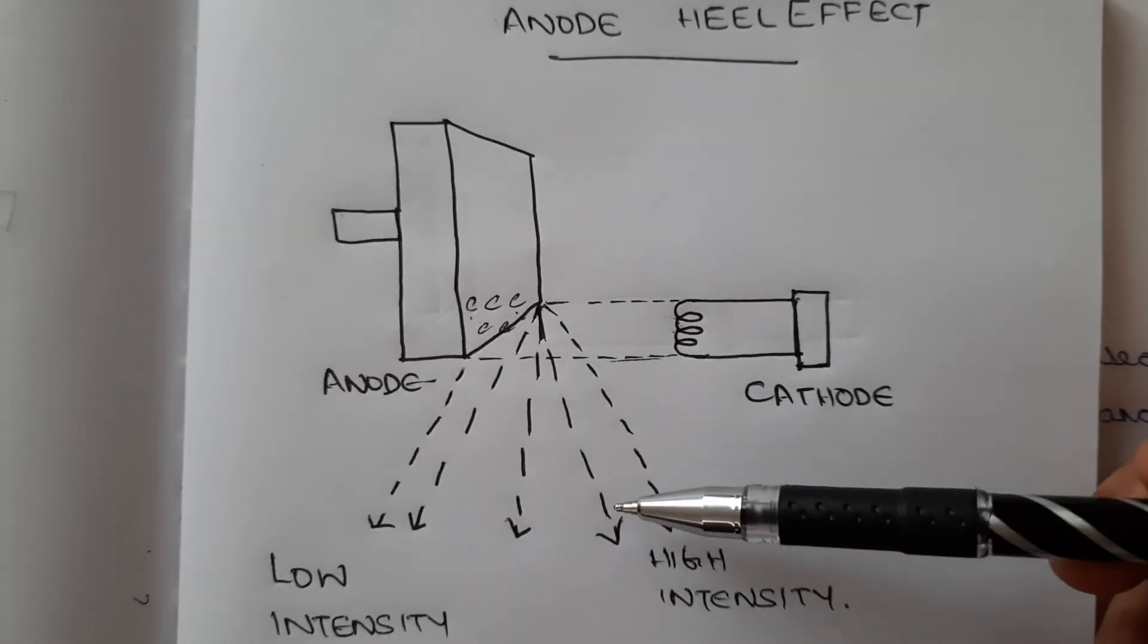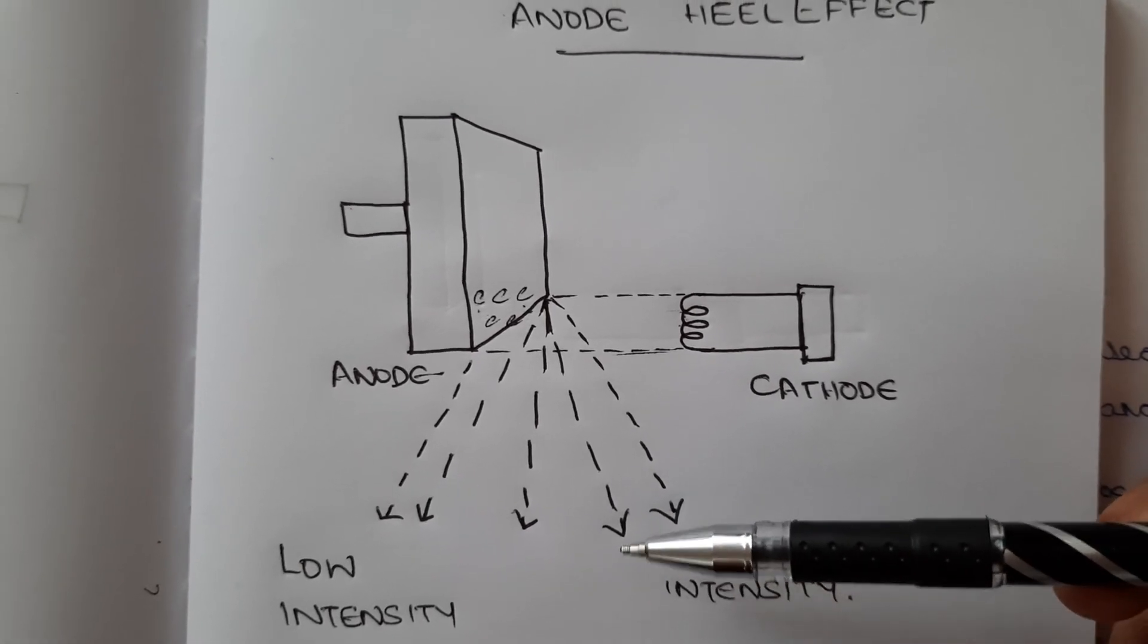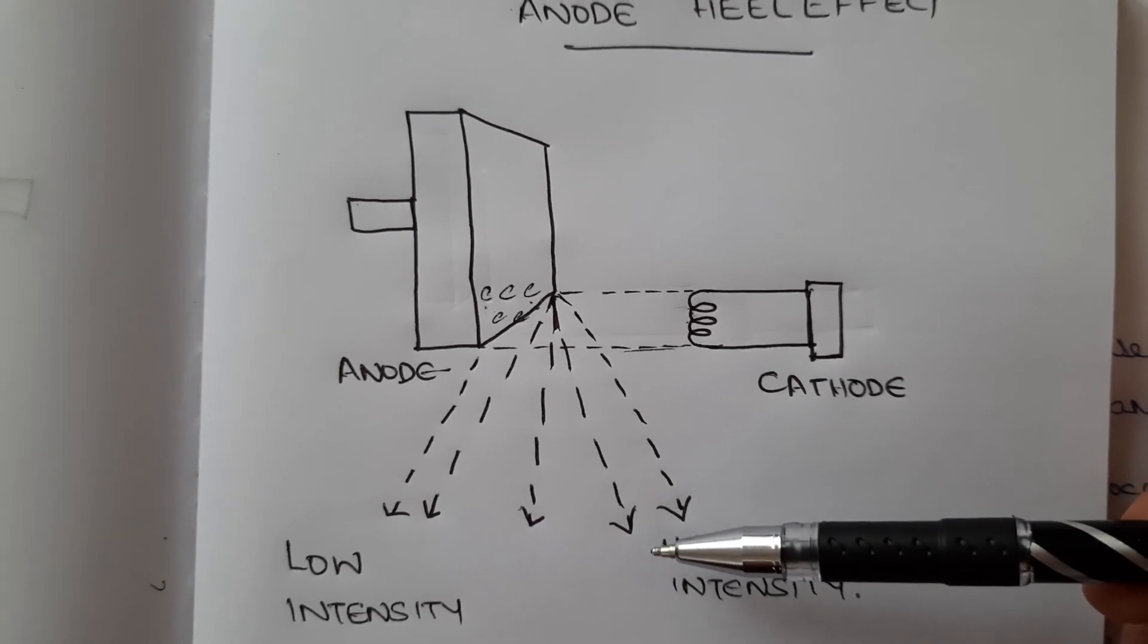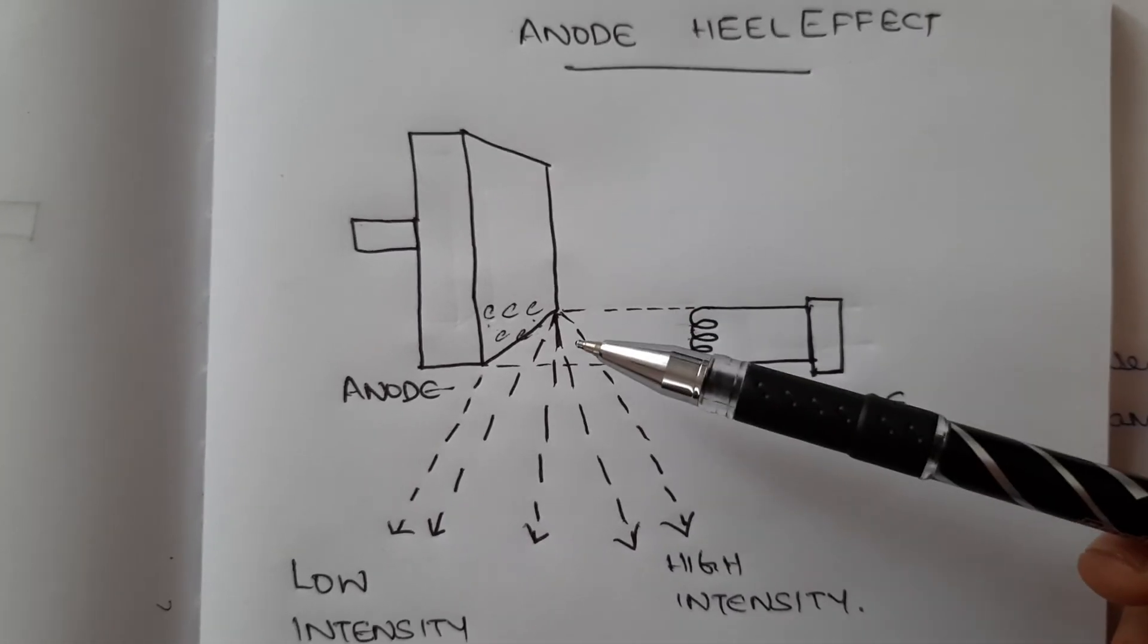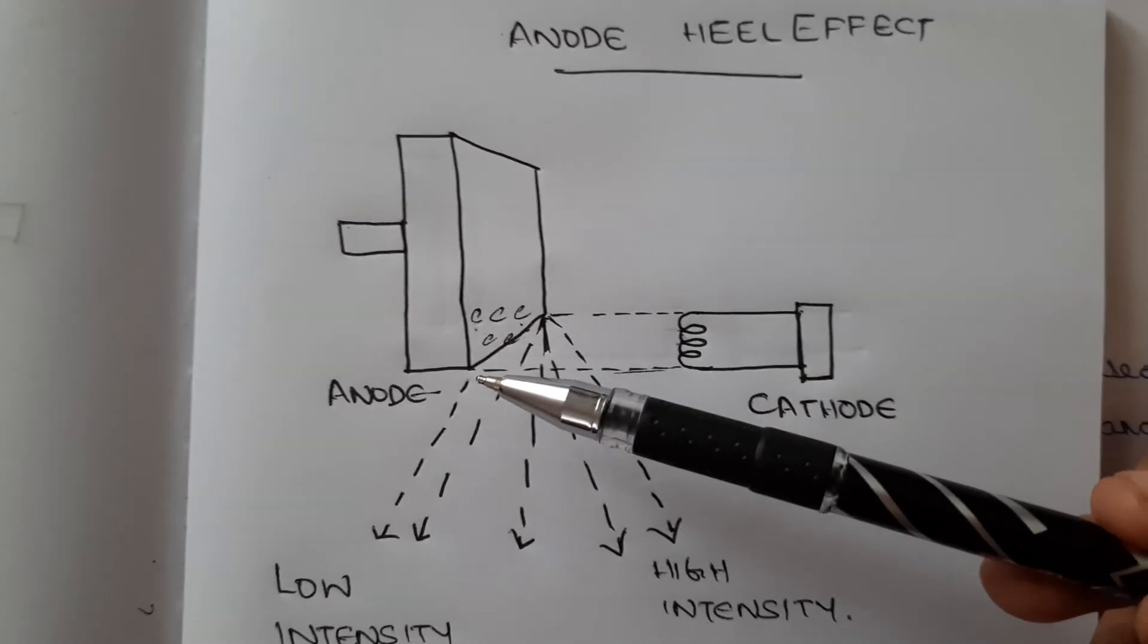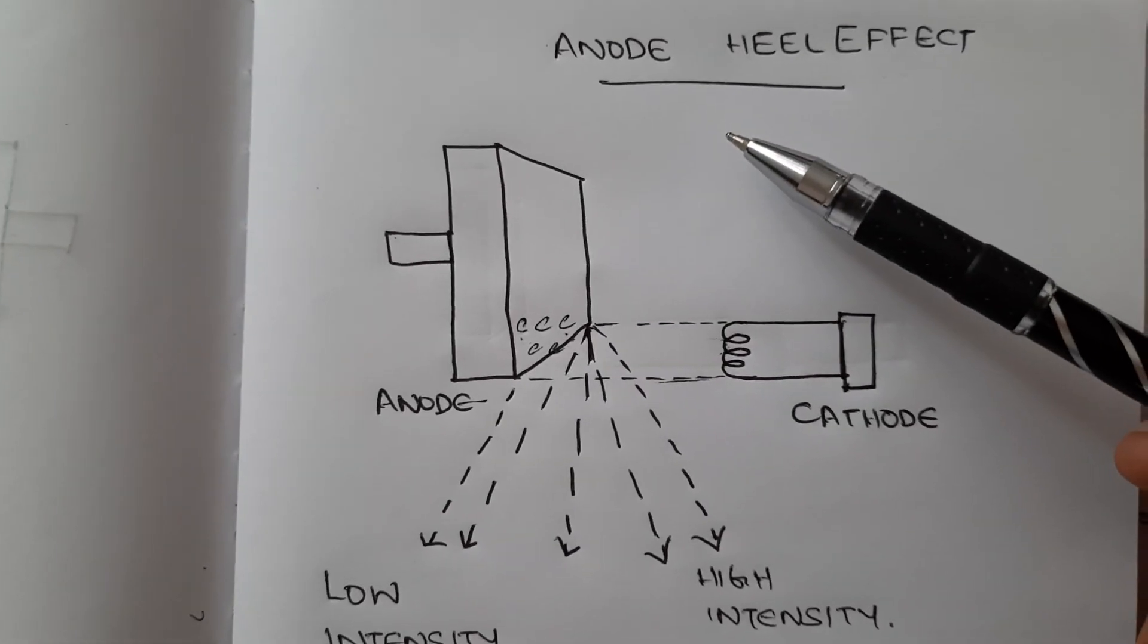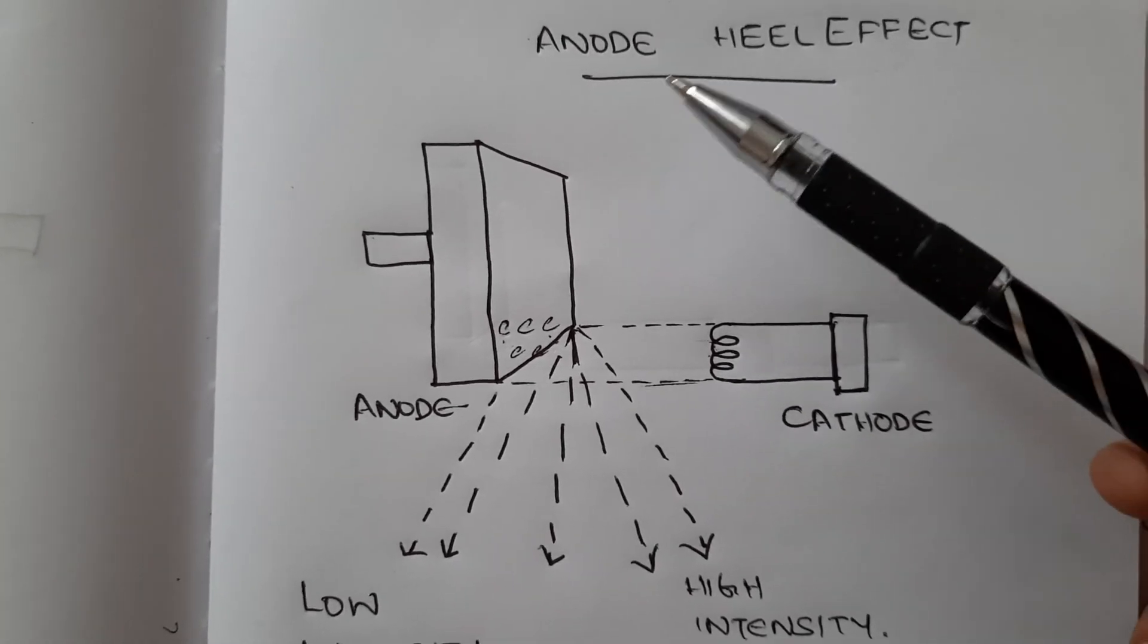We can also adopt the anode heel effect for taking x-rays of the L-spine or abdomen as I said. Although the anode heel effect is due to the angulation of the anode, it also gives a positive result for taking certain x-rays. This is all about the anode heel effect.